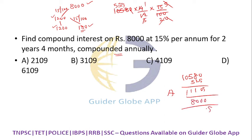The total amount is ₹11,109. The principal is ₹8,000. Therefore, the compound interest is 11,109 − 8,000 = ₹3,109.